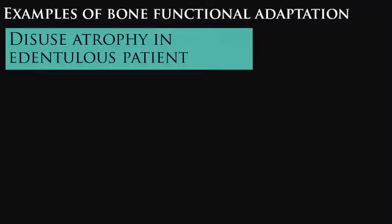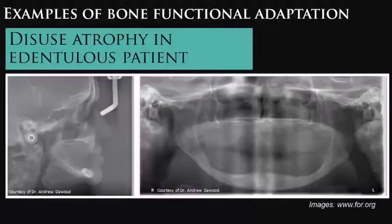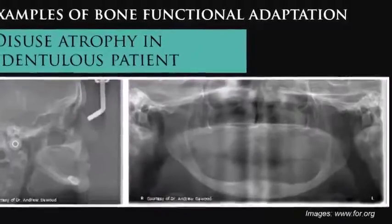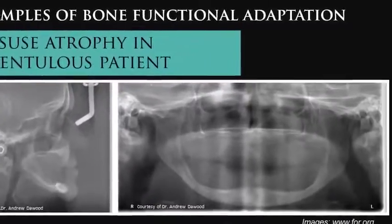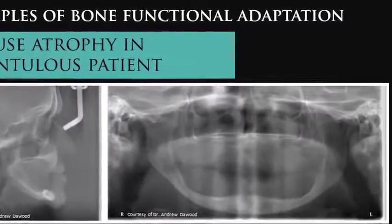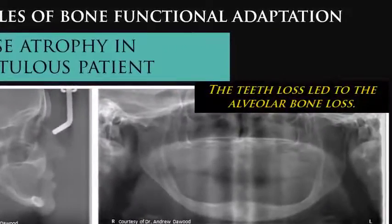Another classic example of bone functional adaptation is the atrophy of the alveolar ridge by disuse in edentulous individuals. That is, the absence of teeth reduces the transmission of force to the bone, which adapts to this new situation through atrophy by bone resorption.